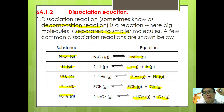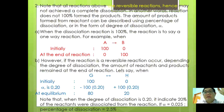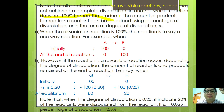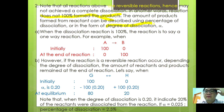Now all these reactions are reversible, hence they may not achieve complete dissociation. In other words, the reaction does not 100% form the products. So the amount of product formed from the reactant can be described using percentage of dissociation, or in the form of degree of dissociation, namely alpha.